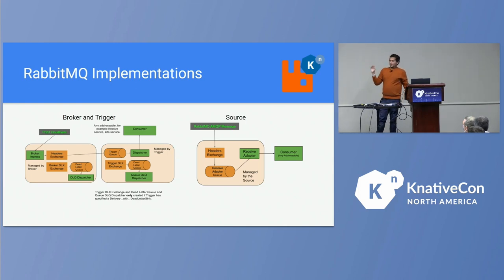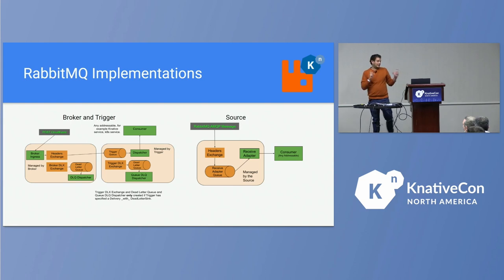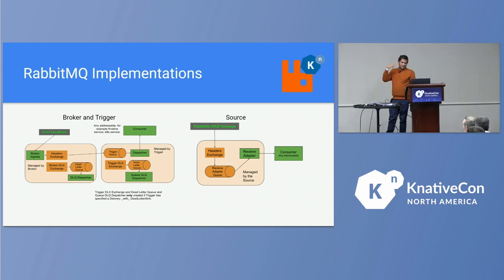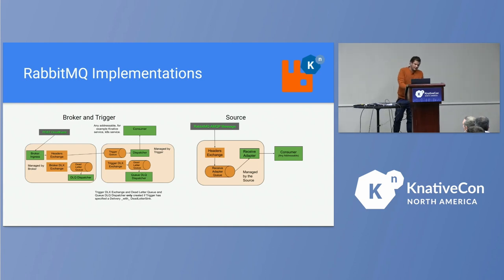The orange bits in our architecture are managed by RabbitMQ — that is not a problem for Knative, as RabbitMQ has its own way of handling errors and messages. The green bits are what we had to implement in Knative: the source adapter, dispatcher, DLQ dispatcher, consumers, and all of that.